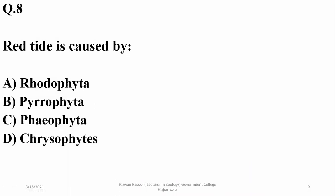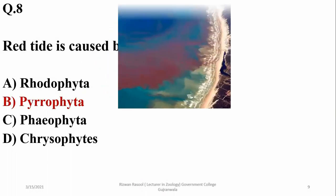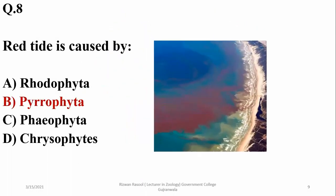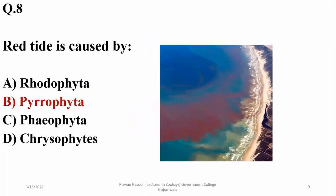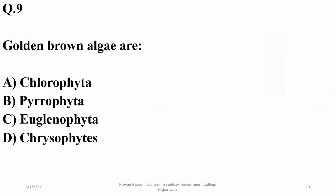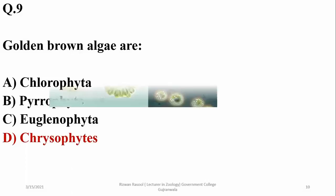Red tide is caused by dinoflagellates (Pyrrophyta), which usually color the seawater red, orange, or brown — that phenomenon is called red tide. Golden brown algae are also known as chrysophytes or diatoms.